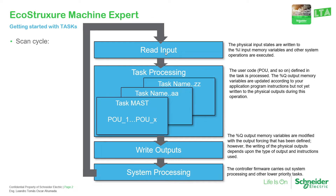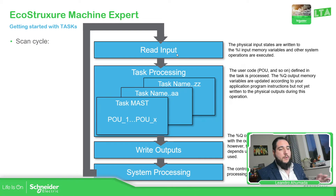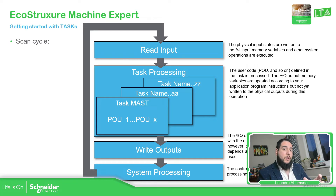The PLC first reads the inputs memory — %I, we're going to cover that later — but that information is going to be used in the POUs that we have in the different tasks. Then what this PLC does is to write directly into the outputs that we have. Then it finishes with some system processing, some background and low priority tasks, and then it goes again into the cycle. So to have a rough idea: read the inputs, execute your code in the POUs, then update the values in the outputs. That is what the PLC does continuously.